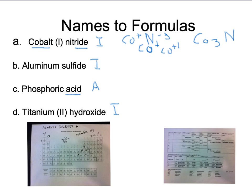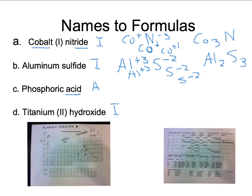Next one is also ionic. Aluminum has a constant charge — it's plus three. Then it says sulfide; sulfide is right underneath oxygen in the minus two column. With a plus three and a minus two, the only way to balance is to get six of each — that means two aluminums and three sulfurs. Putting it all together you get Al2S3.